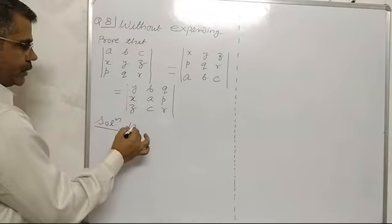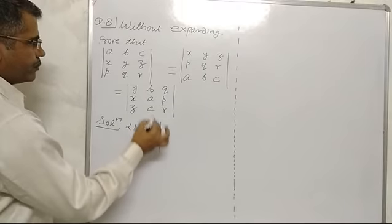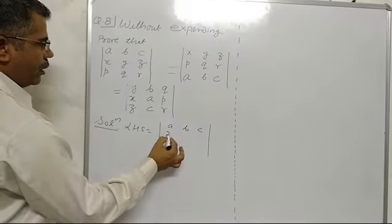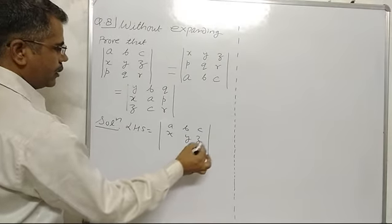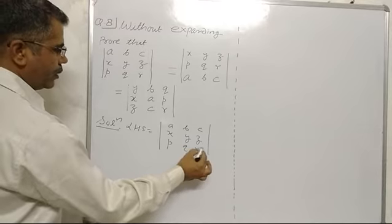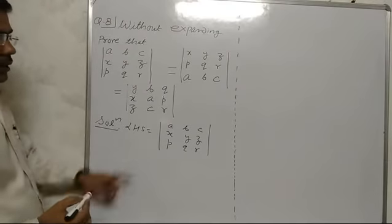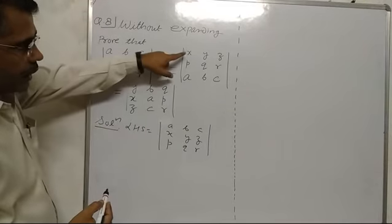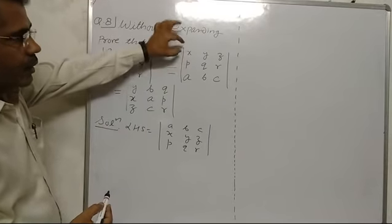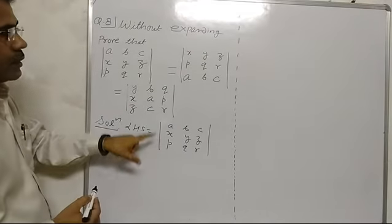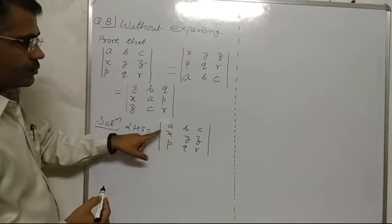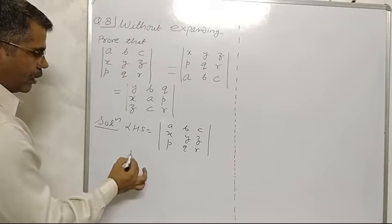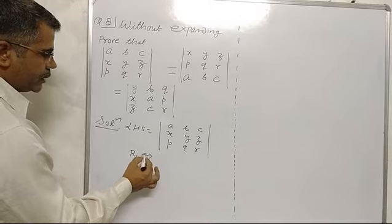Solution. LHS equals the determinant with rows A, B, C; X, Y, Z; P, Q, R. We need to find this determinant equal to the required form. We have X, Y, Z in the first row, so we interchange first and second row: R1 interchange R2.